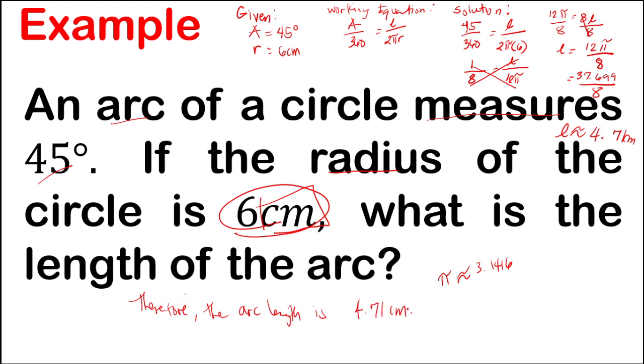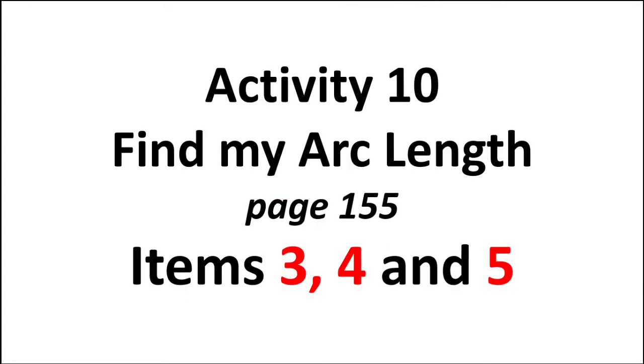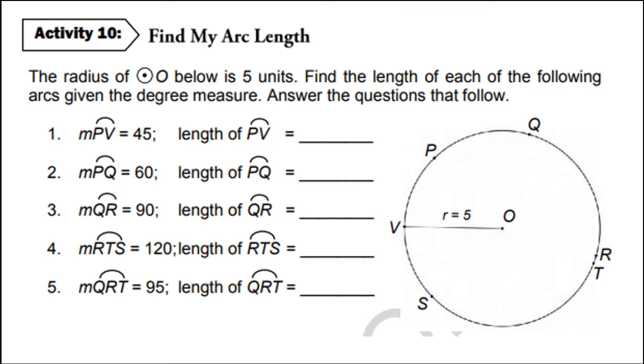So that's how you solve for arc length. Now, on your activity, activity number 10, find my arc length, page 255. Kindly answer items 3, 4, and 5 only. So 3 items na kasasagutan. So here is the activity, page 255. The radius of circle O below is 5 units. Find the length of each of the following arcs, given the degree measure, and answer the questions that follow. You have to answer the questions that follow as well.